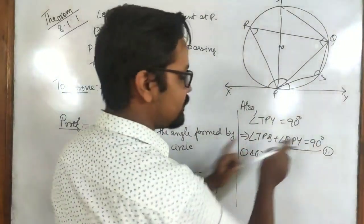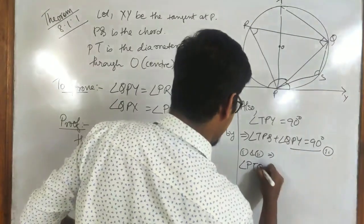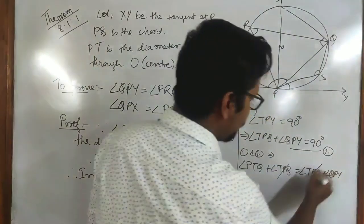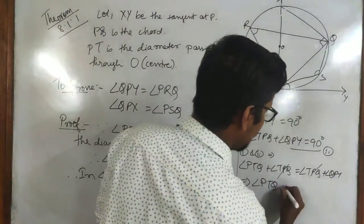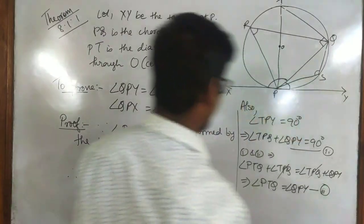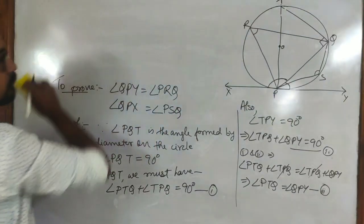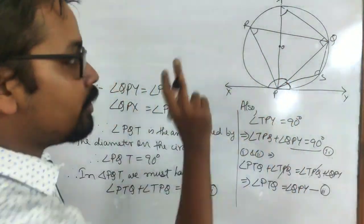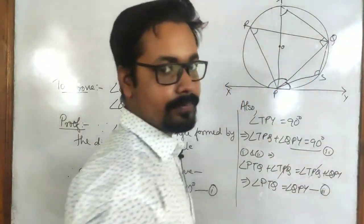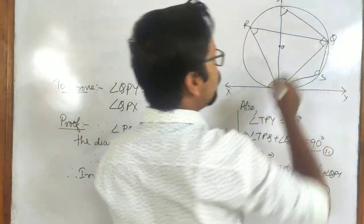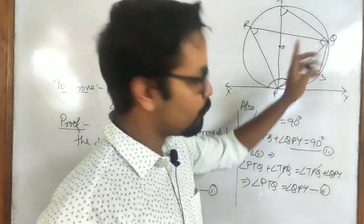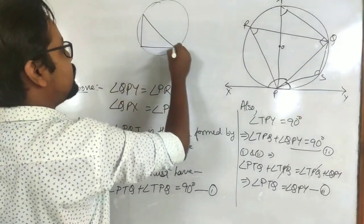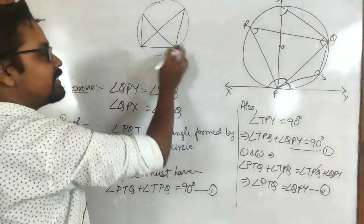From equations (1) and (2), both equal 90°. So: angle PTQ + angle TPQ = angle TPQ + angle QPY. The common term angle TPQ cancels from both sides, giving angle PTQ = angle QPY. Let this be equation (3). So we have proved that angle PTQ and angle QPY are equal.